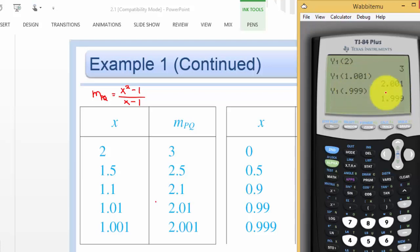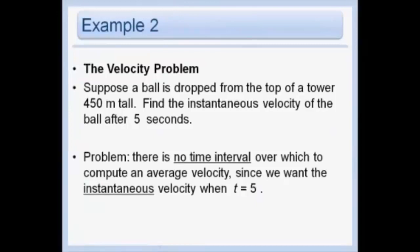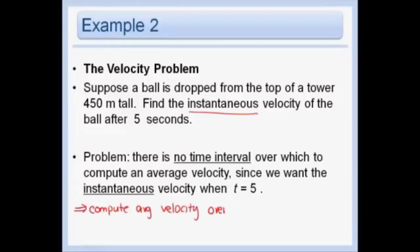Now let's look at example two, the velocity problem. Suppose that a ball is dropped from the top of a tower 450 meters tall; find the instantaneous velocity of the ball after five seconds. Instantaneous velocity means what is the velocity at exactly five seconds. Just like in our last problem, we don't have a time interval — usually we find average velocity between two points — but I want the velocity at precisely five seconds, so I'm presented with that same exact problem. We compute average velocity over smaller and smaller intervals beginning at time equals five.